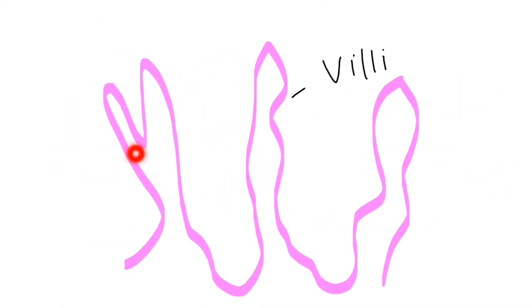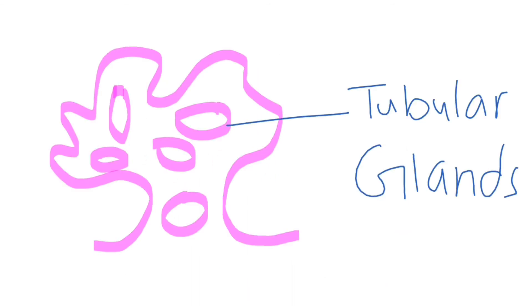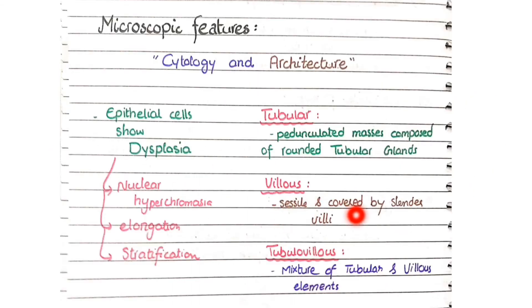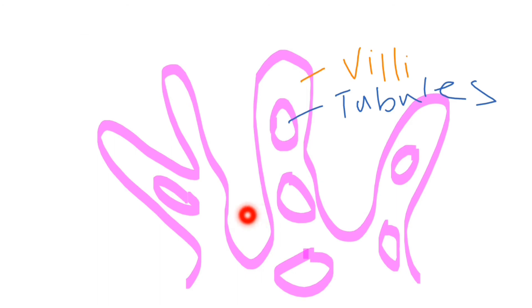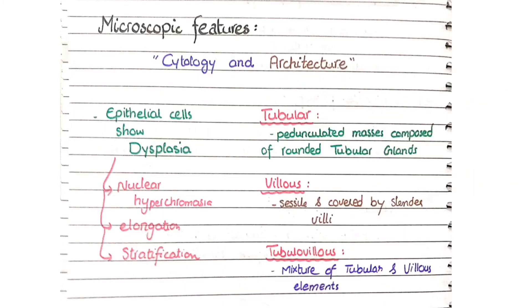The third architectural type is tubulovillous, in which there is a mixture of tubular and villous elements. You can see villi alongside tubular glands. So tubulovillous adenomas show both villi and tubular glands.